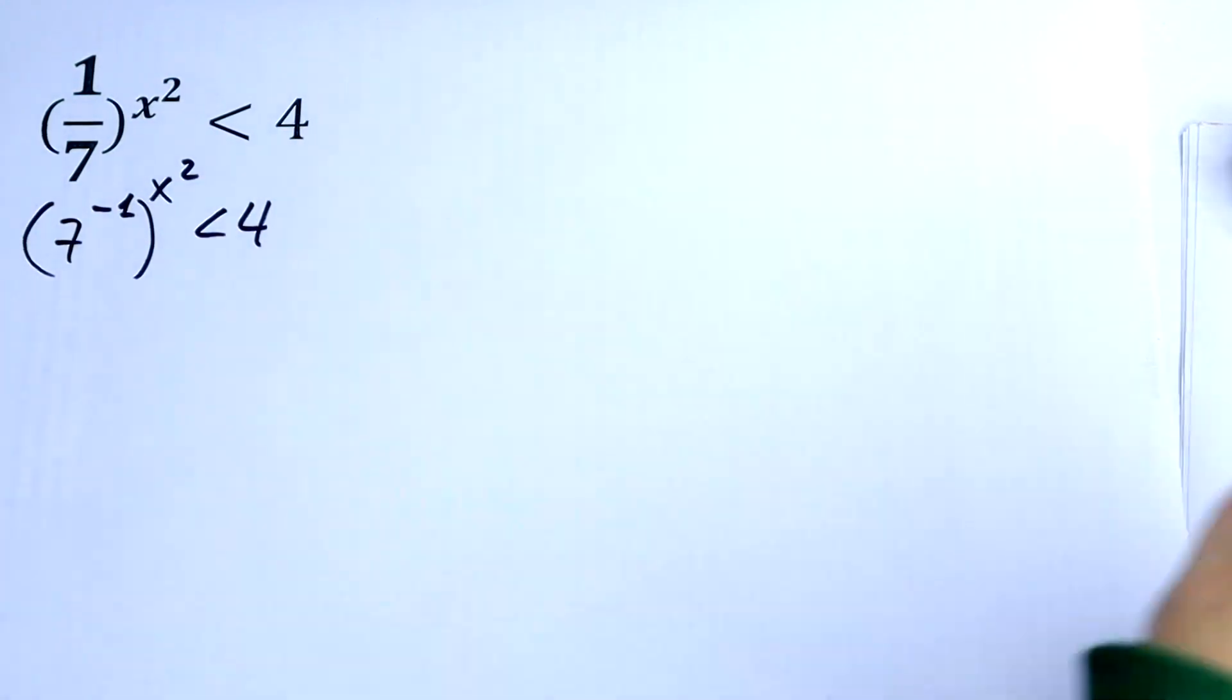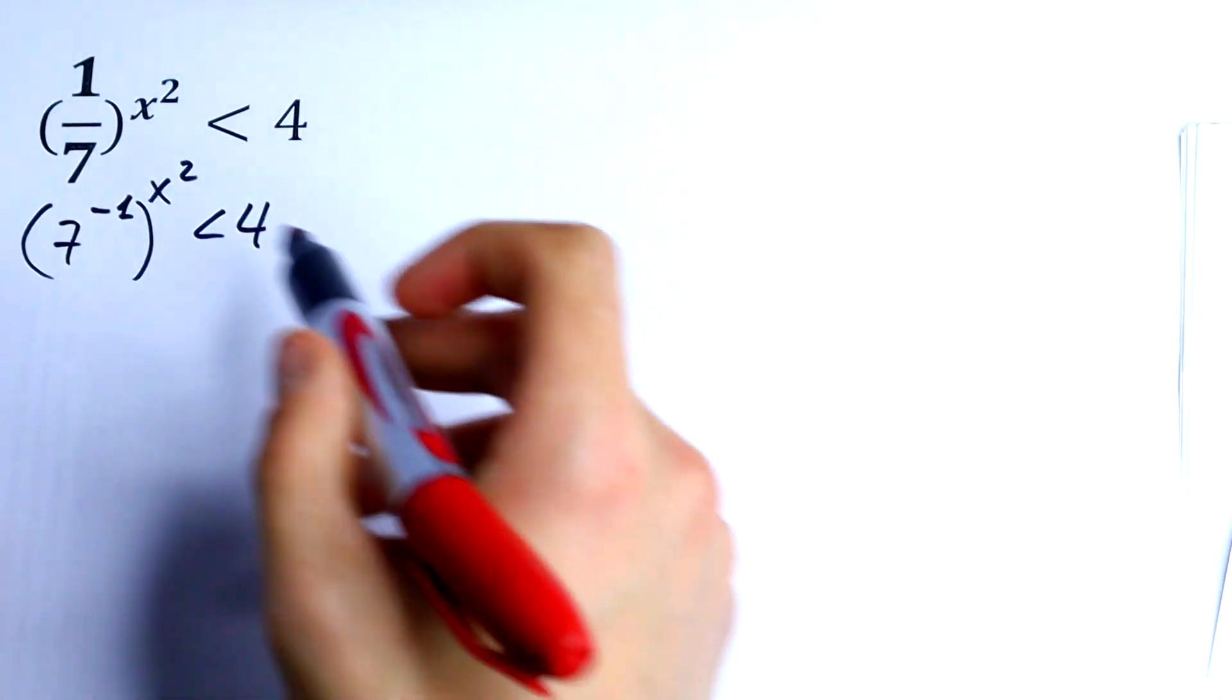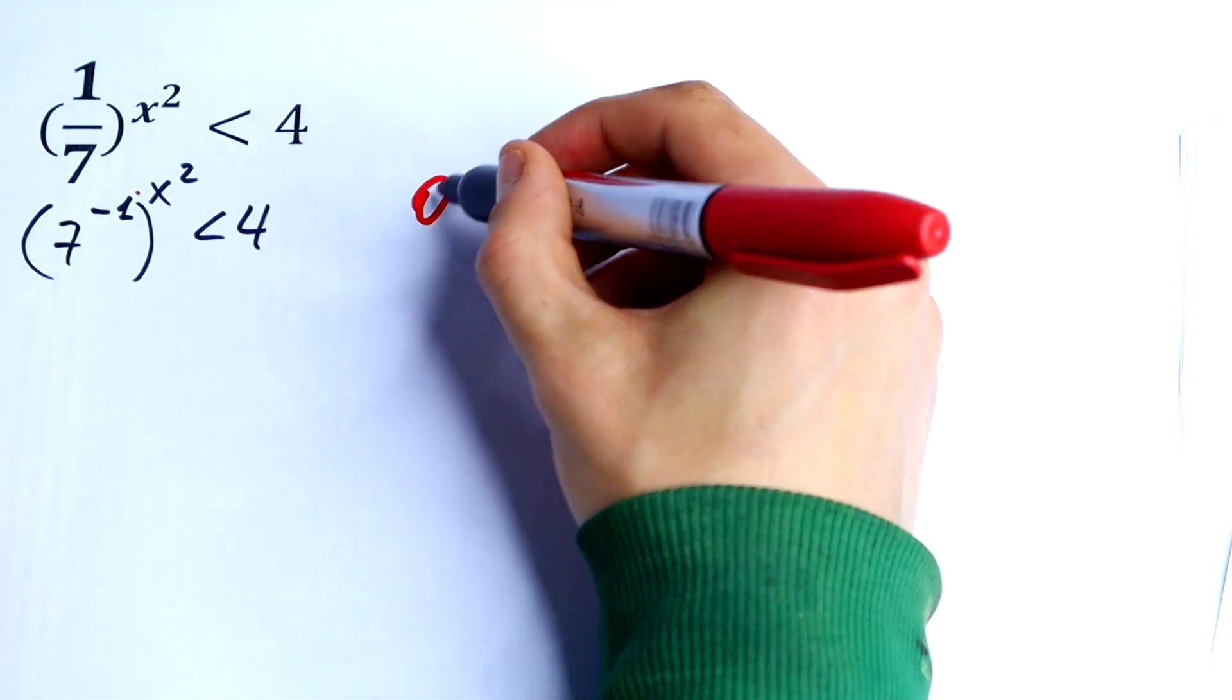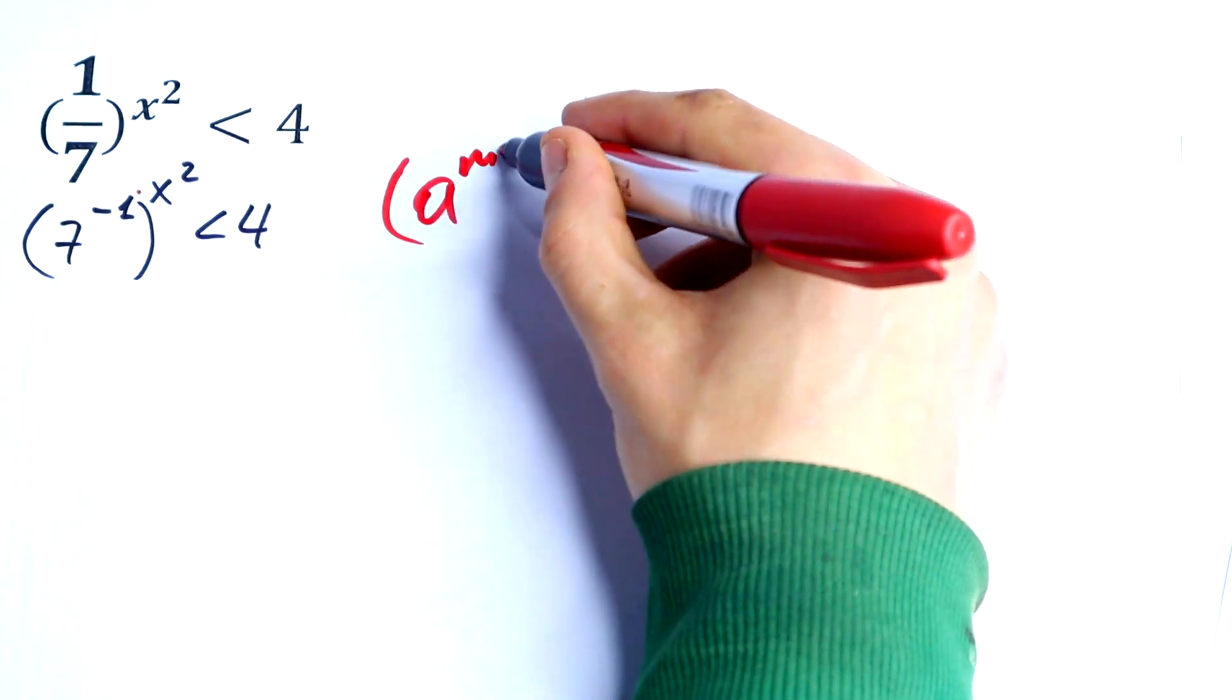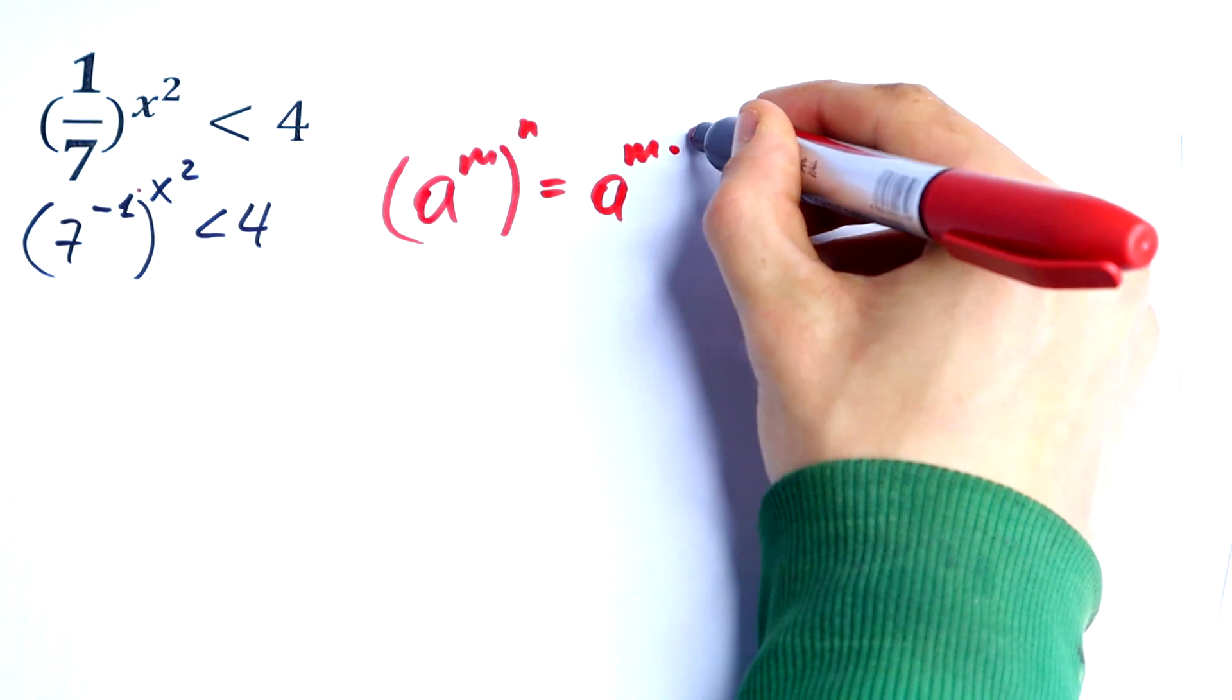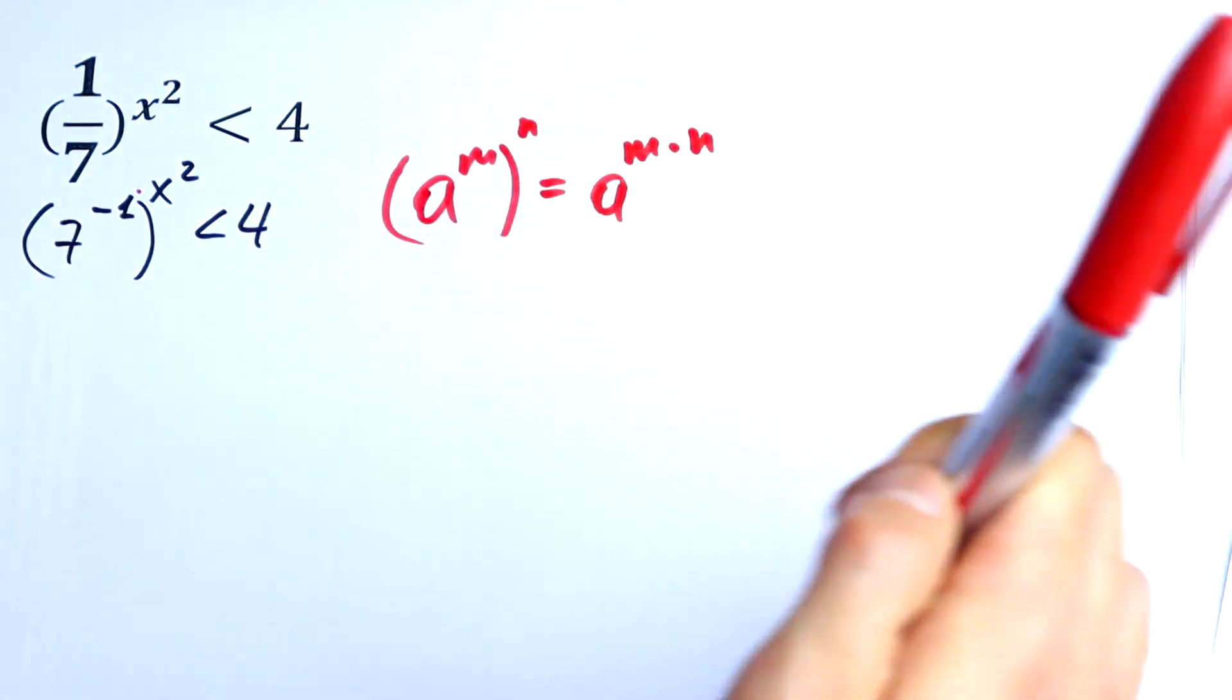Second thing I will do is to multiply this power and this, because we know when we have a to the power m all raised to the power n, it would be equal to a to the power m times n. So we just multiply our exponent.